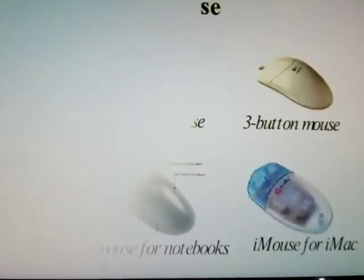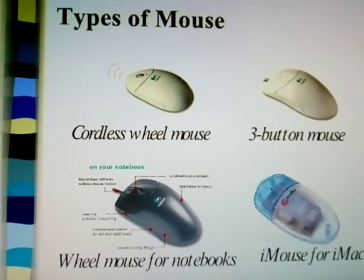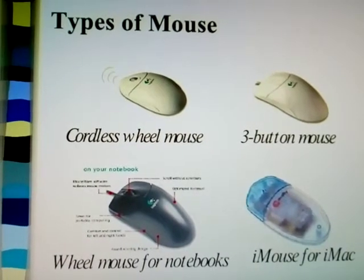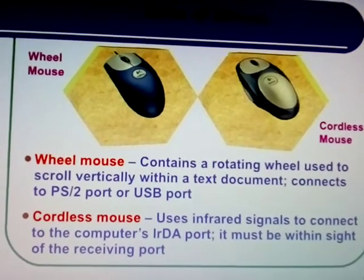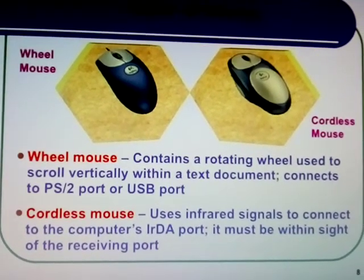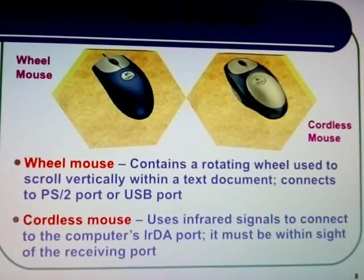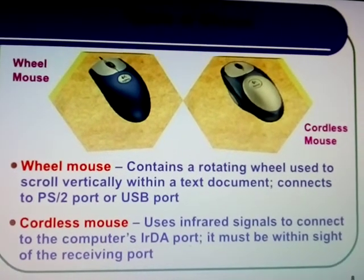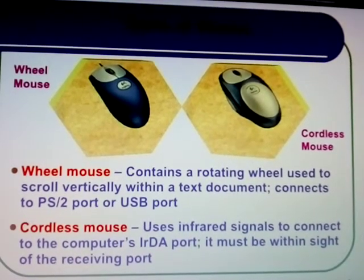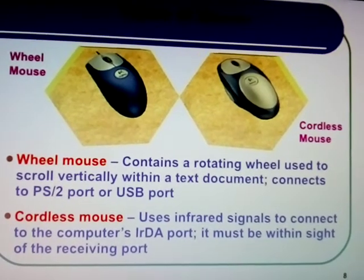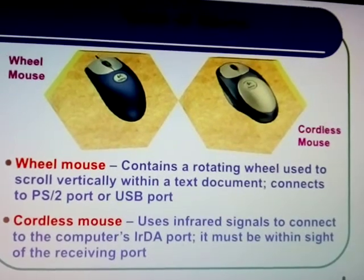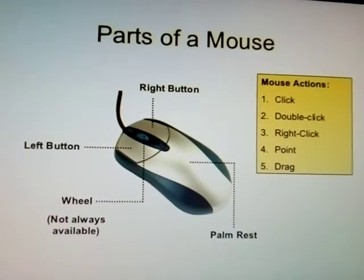Types of mouse include the wheel mouse and the cordless mouse. A wheel mouse is used to scroll vertically through text documents. A cordless mouse uses signals to connect to the computer.